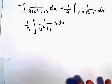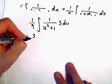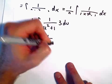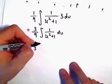So now we're pretty much done. We've done everything. We can pull the 3 out front, that would give us 3 over 9. And then we would have the integral of 1 over u squared plus 1 du. So 3 over 9, that just gives us 1 third.